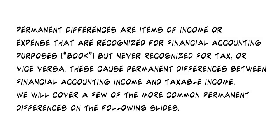Permanent differences are items of income or expense that are recognized for financial purposes — books — but never recognized for tax, or vice versa. These cause permanent differences between the financial accounting income and the taxable income. We will cover a few of the more common permanent differences on the following couple of slides.